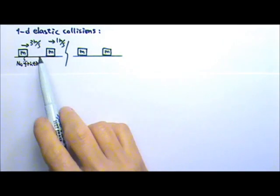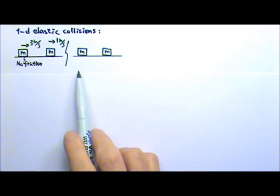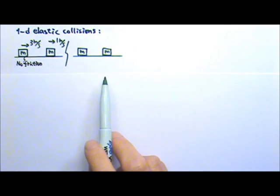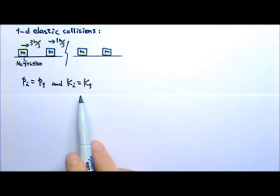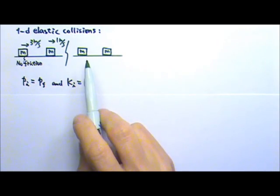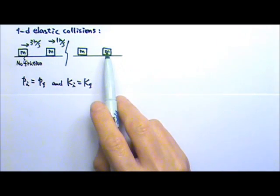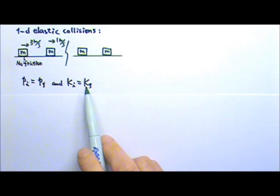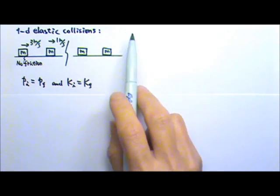Because it is an elastic collision, the outcome must satisfy two conditions: momentum conservation and kinetic energy conservation. We have two unknowns, V1F and V2F, two equations, so we have one unique set of solutions.